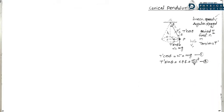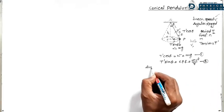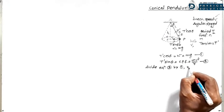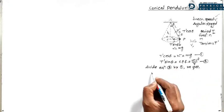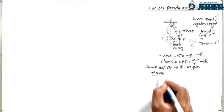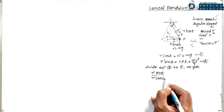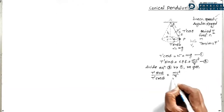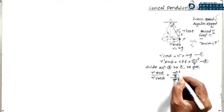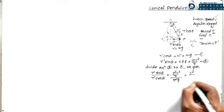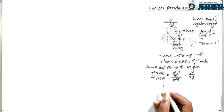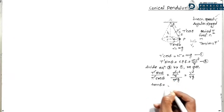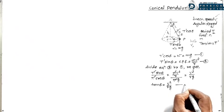Dividing equation 2 by equation 1: T' sin theta divided by T' cos theta equals (mv²/r) divided by mg. T' cancels and m cancels, giving tan theta = v²/(rg). This is equation number 3, which will be used further. Therefore, v² = rg tan theta, so v = √(rg tan theta). This is equation number 4, the expression for linear speed.